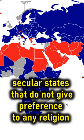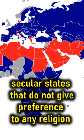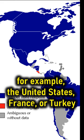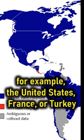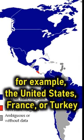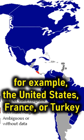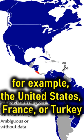Then, secular states that don't give preference to any religion — for example, the United States, France, or Turkey. There are 120 such countries.